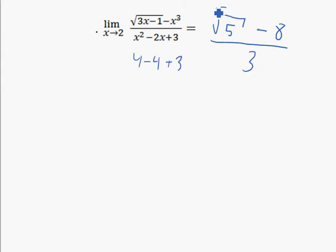Well, that's just three and there's your answer. You don't have to do any work for this. Since this function is continuous at two, the limit approaches what it equals, which is the square root of five minus eight over three.